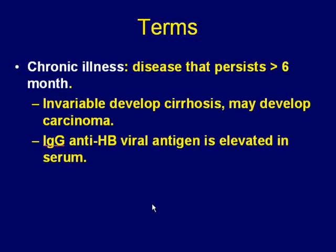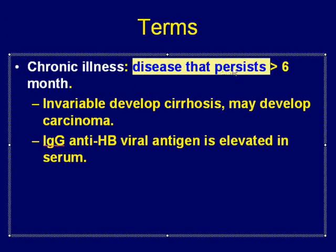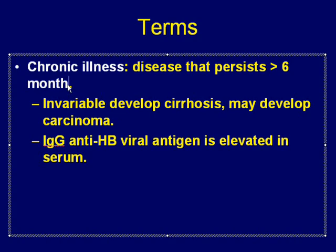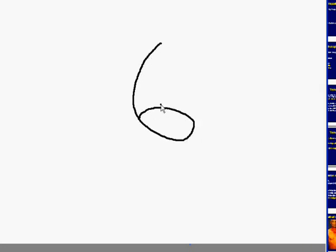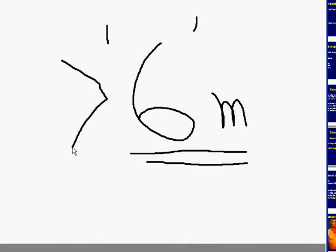When it comes to chronic illness, it is very important that we understand its definition. How do you define a patient as having chronic viral hepatitis? The definition states that if the patient has a disease that persists for more than six months, then the patient is defined as suffering from chronic viral hepatitis. Keep this number — six months — firmly in mind.